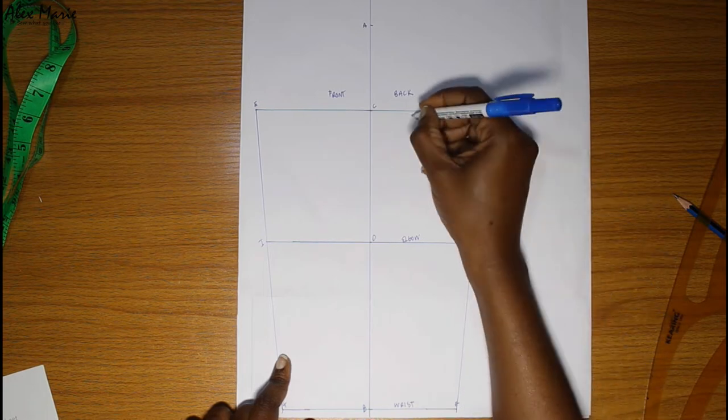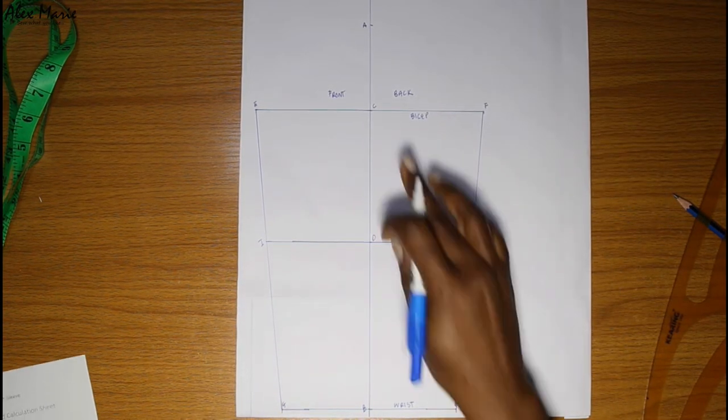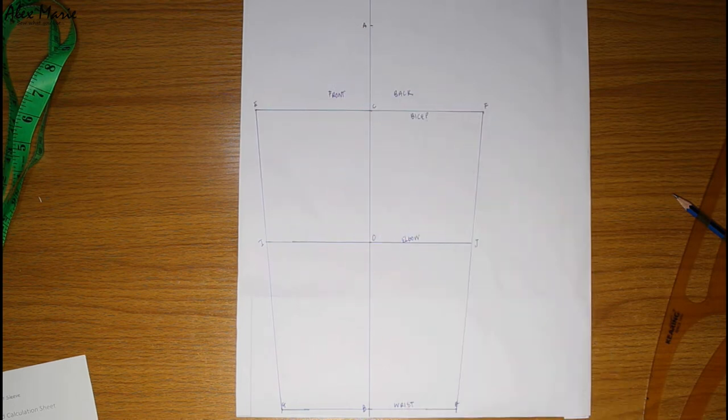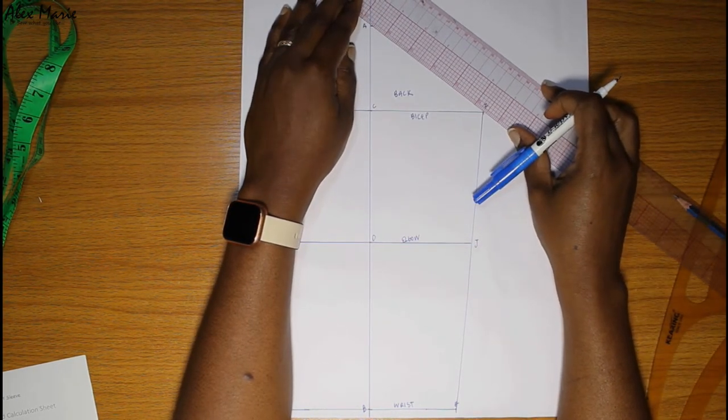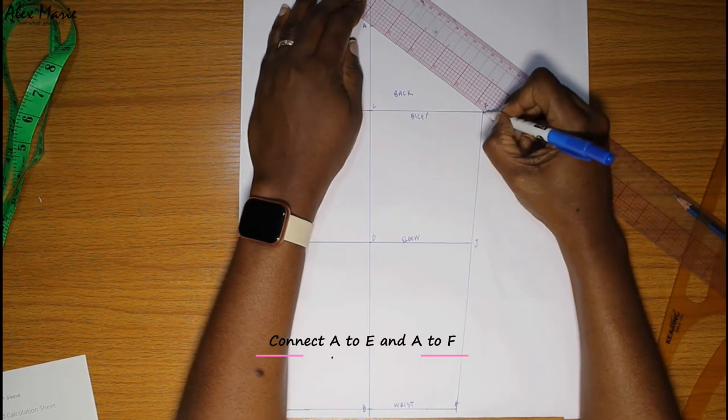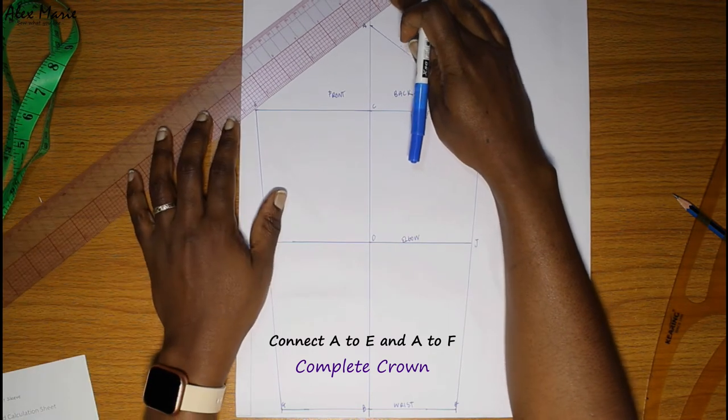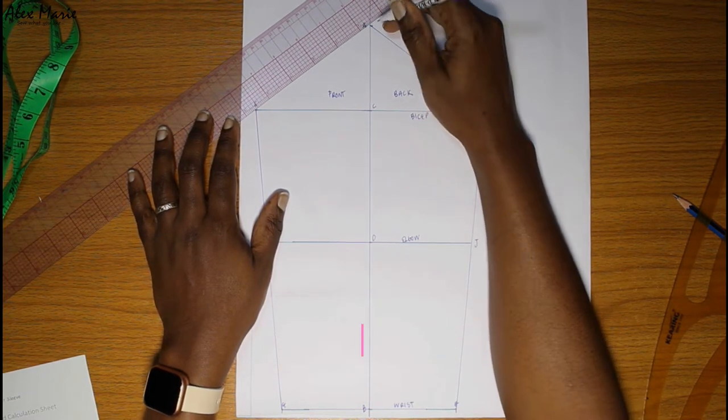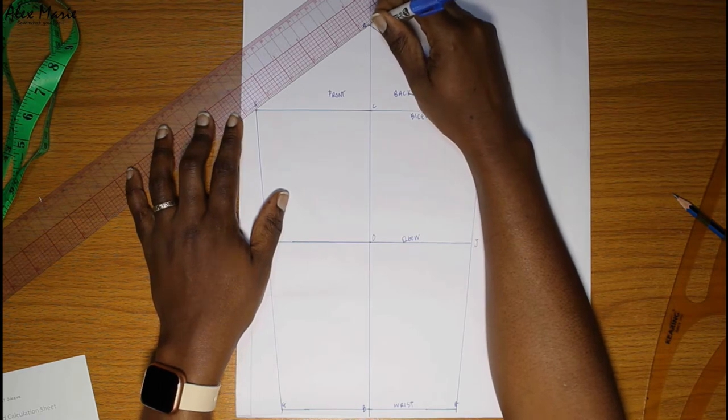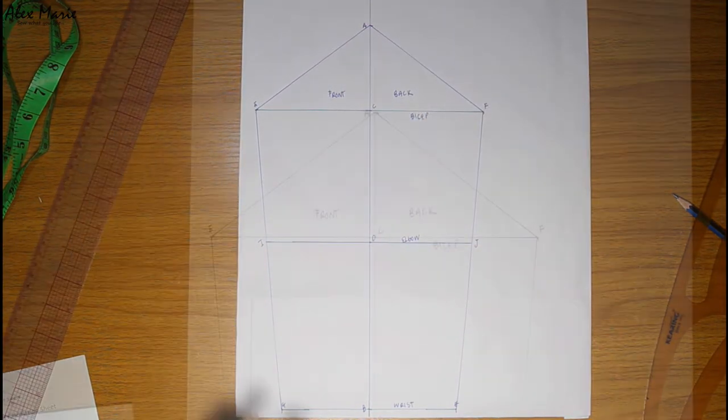Our wrist, but it should be our base—but it's still your wrist, it's the same thing—your bicep. Now complete the crown. Just join A to F and A to E, and that completes your crown.